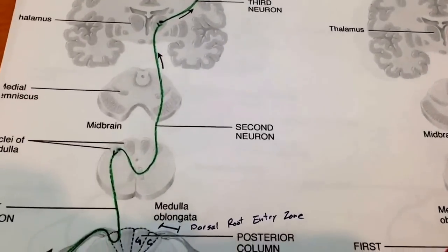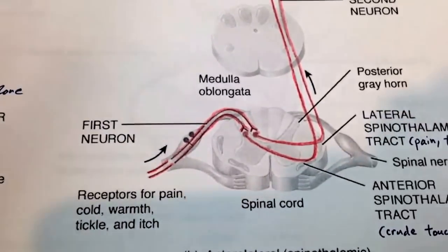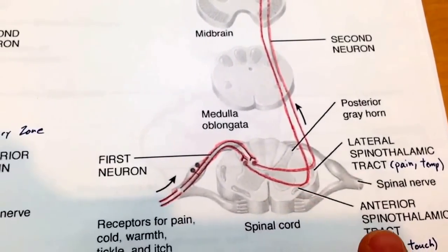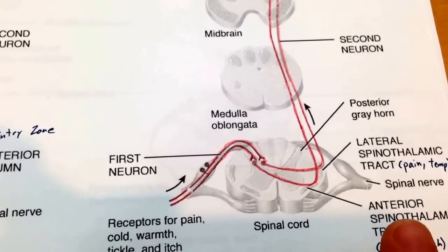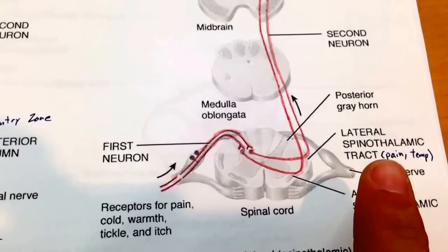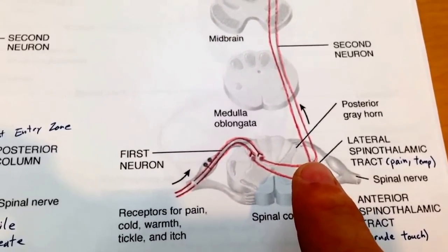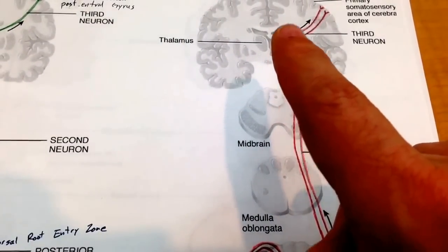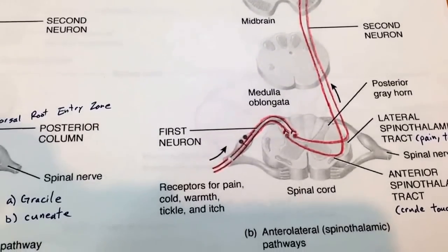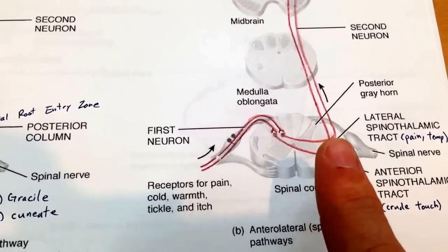Looking in more detail at the spinothalamic tract, we can see the difference between the anterior and lateral divisions. The anterior division decussates and runs more toward the front — it's more responsible for crude touch, and we don't need to focus on it as much. For our test, we're mostly concerned with the lateral spinothalamic tract, which carries pain and temperature. It enters, passes through the dorsal root ganglia, decussates, goes to the lateral side, and sends pain information up to the thalamus and then to the somatosensory cortex in the post-central gyrus.